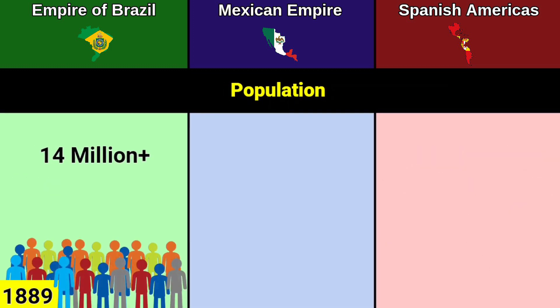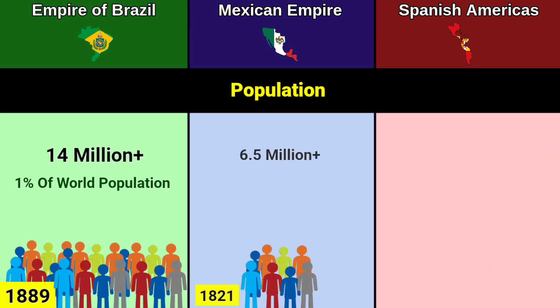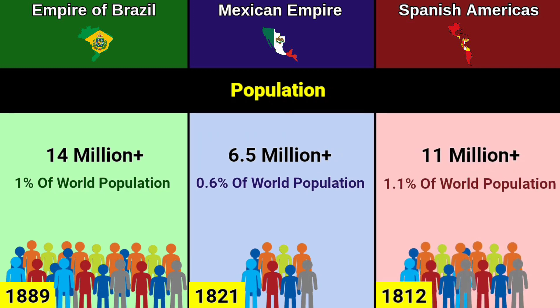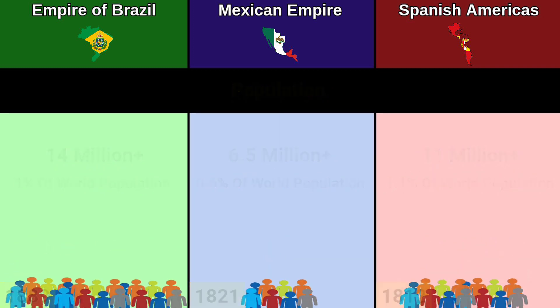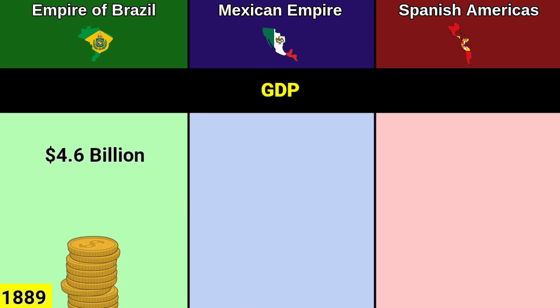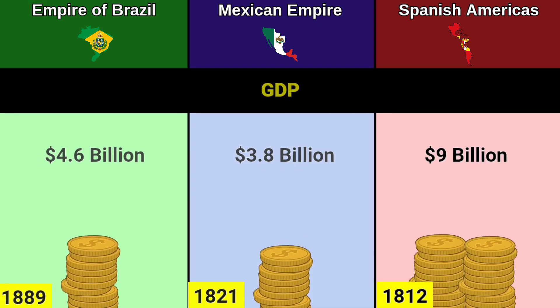Population: 14 million, 1% of world population. 6.5 million, 0.6% of world population. 11 million, 1.1% of world population. GDP: 4.6 billion dollars, 3.8 billion dollars, 9 billion dollars.